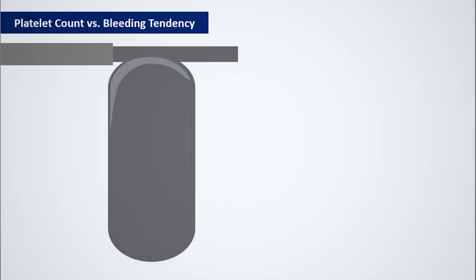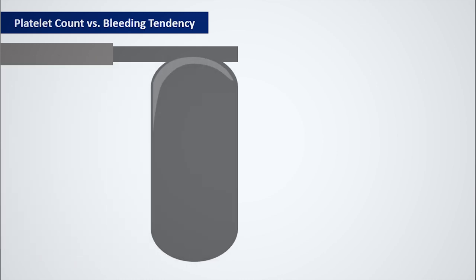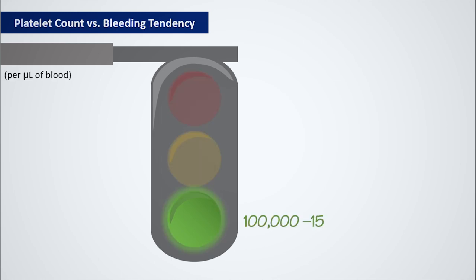Imagine a traffic light — it displays the colors green, yellow, and red. The range between 100,000 to 150,000 is slightly lower but not alarming, meaning that normal function of the platelets is still taking place and hence normal hemostasis is observed. We denote this range by the color green, so we consider this our safe zone.